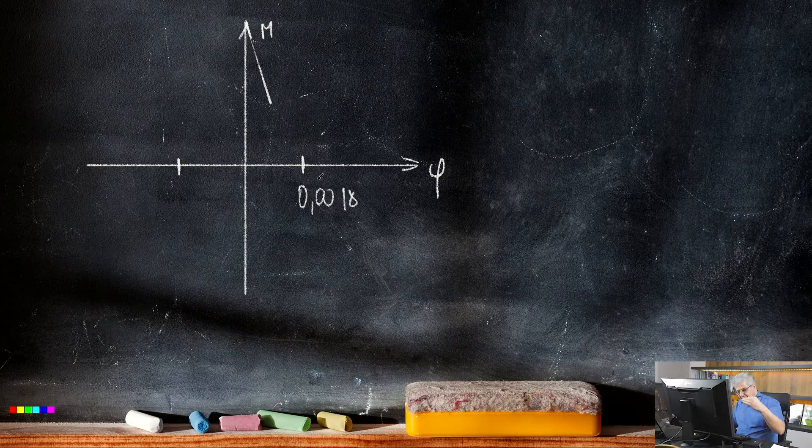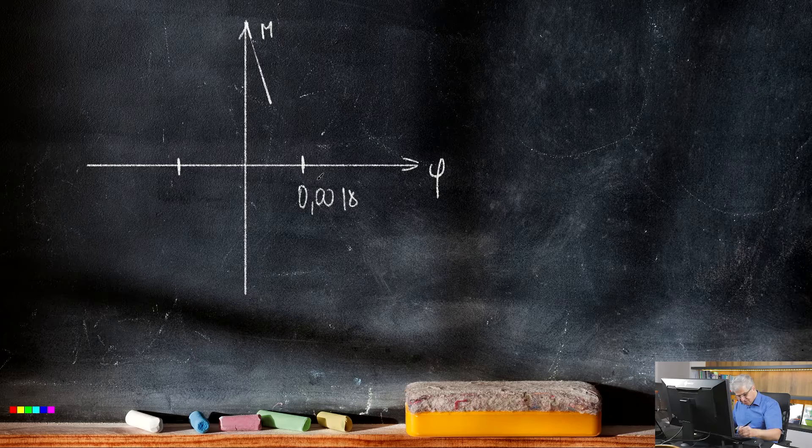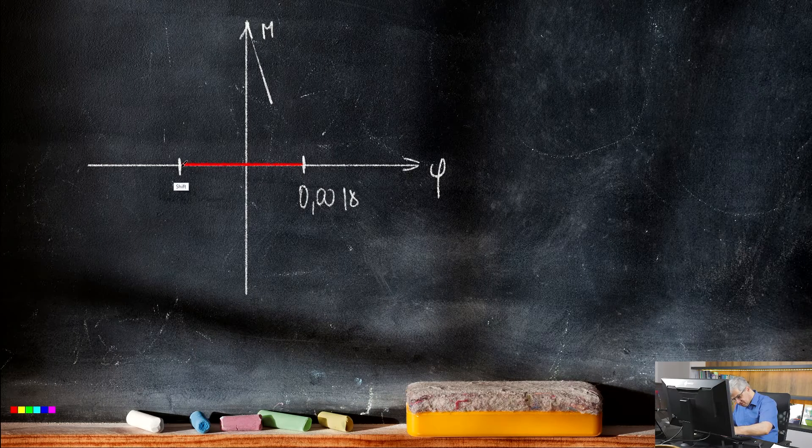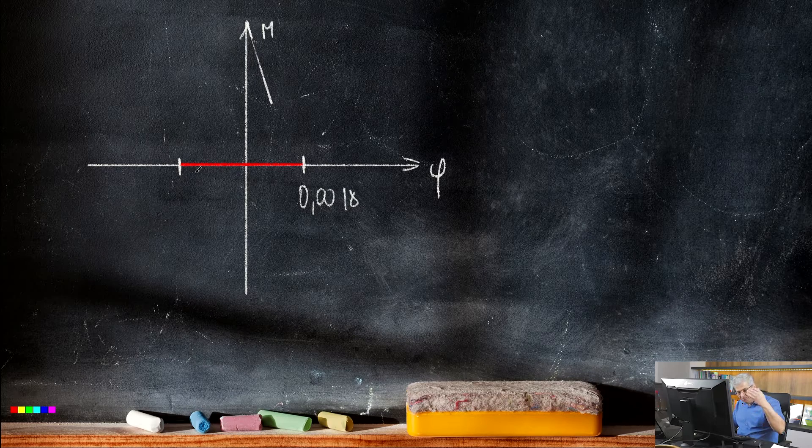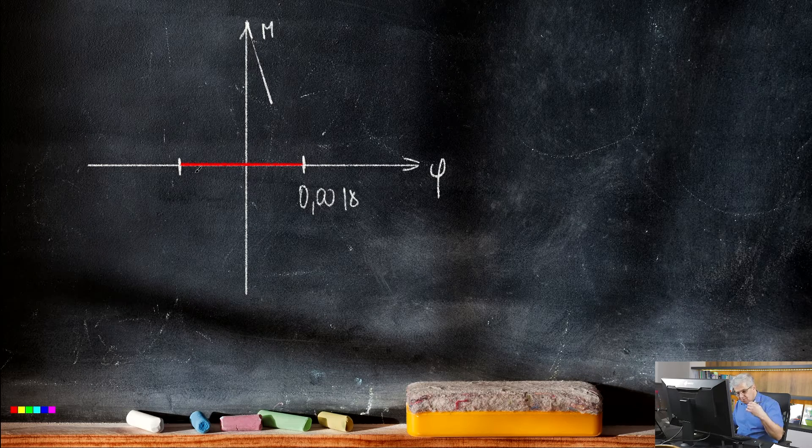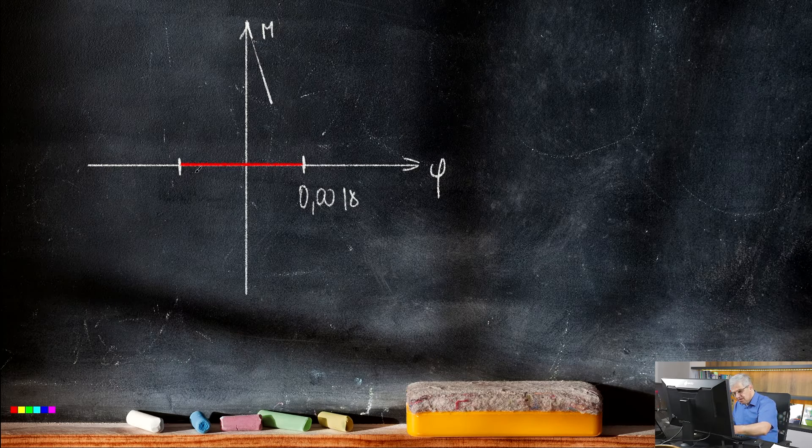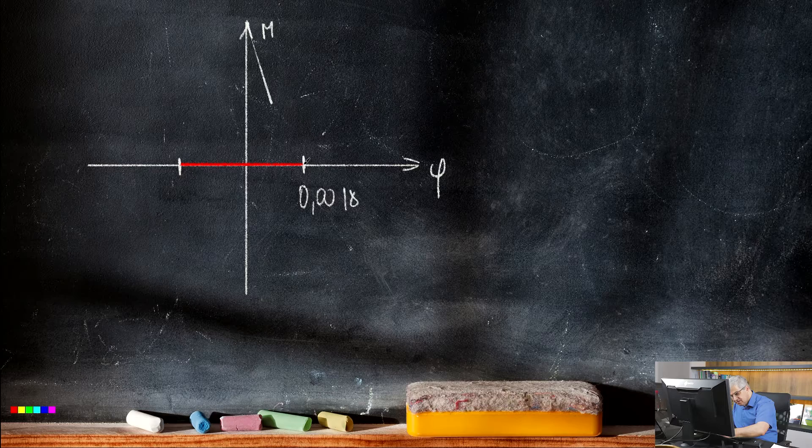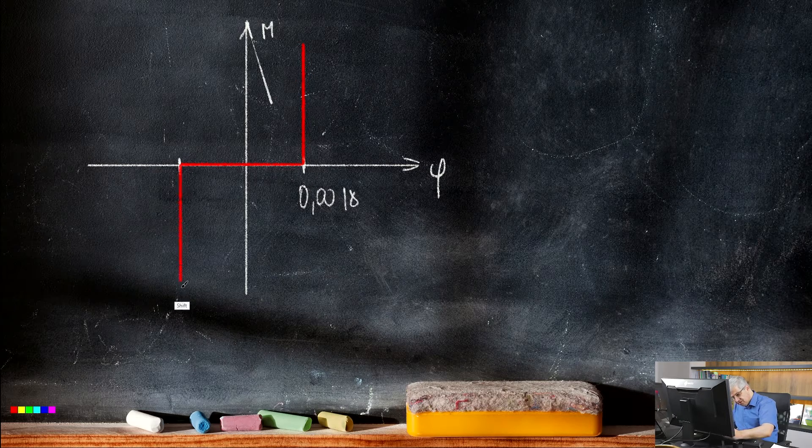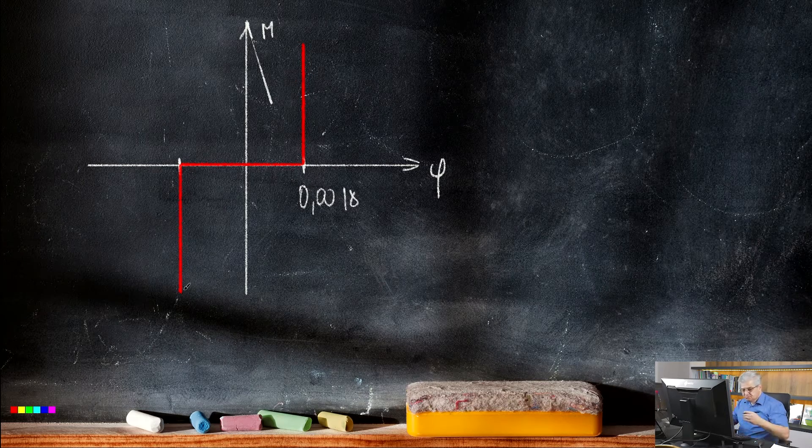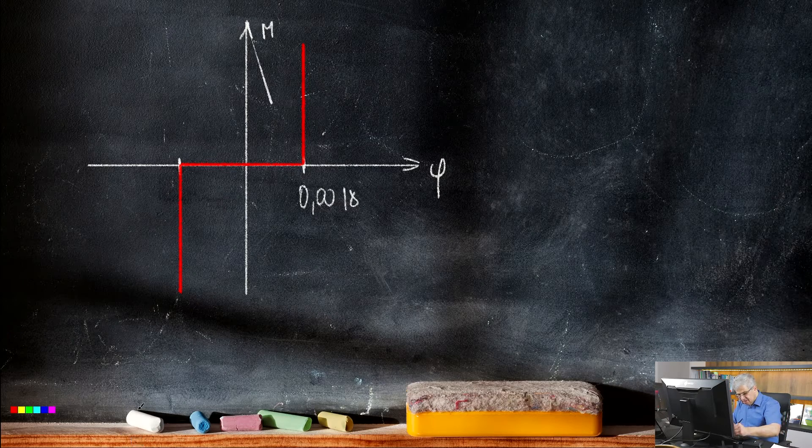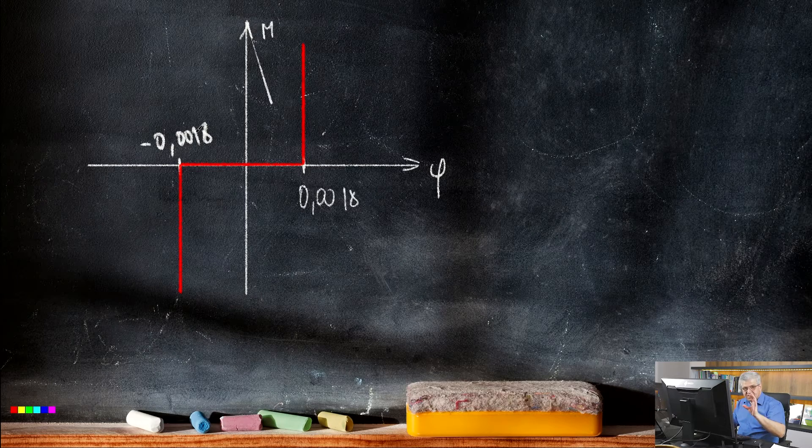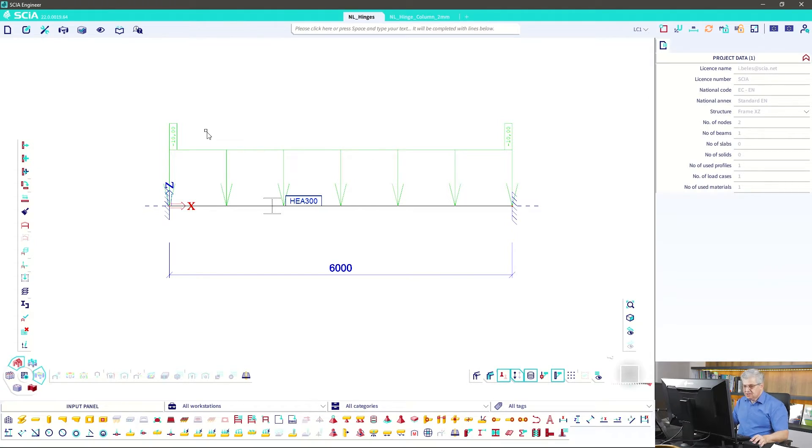We have some limit value which is our 0.0018. So for all rotation below these values we have no bending moment. So we have hinge for all angles below 0.0018, and from this value the angle cannot increase - only the bending moment will increase. So this is our hinge, minus 0.0018, which we have to input in SCIA Engineer. Let's go in SCIA Engineer.